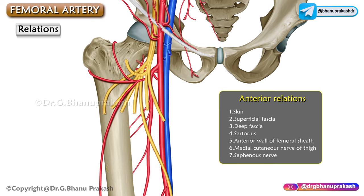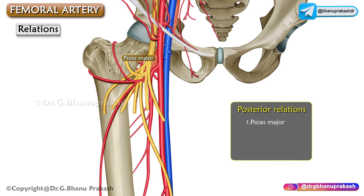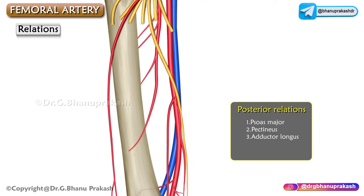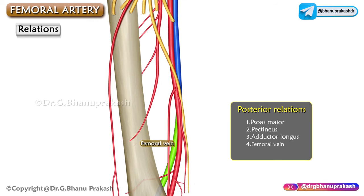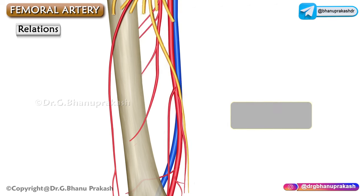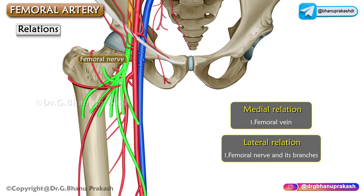The posterior relations of the femoral artery are: psoas major, pectineus, adductor longus, the femoral vein in the lower part of its course, and the adductor magnus muscle. Medially, it is related to the femoral vein, and laterally to the femoral nerve and its branches.